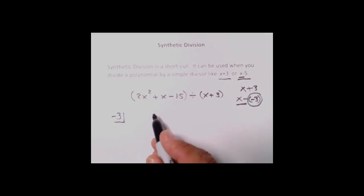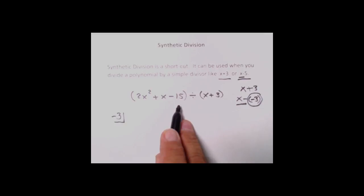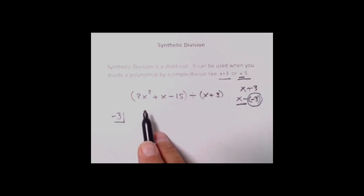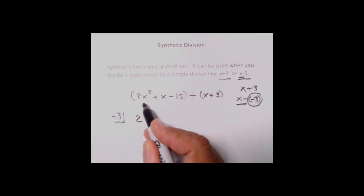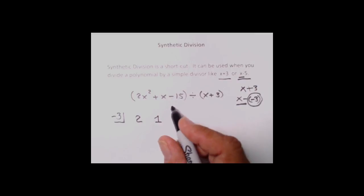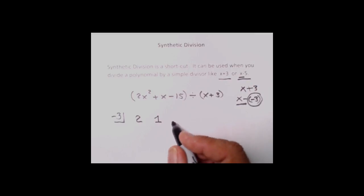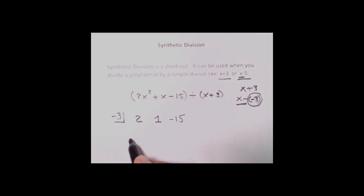Here's how the rest of it gets set up. You just grab the coefficients and write them down. They have to be in descending order, and if there's anybody missing you put a zero in. We've got everybody here: x squared, x to the first power, and a plain number. The coefficient of x squared is 2, the coefficient of x is 1. I'll only put minuses if it's negative, and then the last number is minus 15.